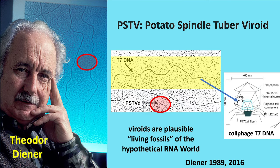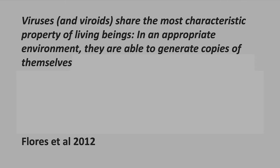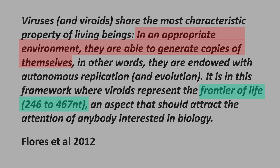That's interesting because we're interested in the origin of life. Flores, in a 2012 paper, wrote: viruses and viroids share the most characteristic property of living beings — in an appropriate environment, they are able to generate copies of themselves. In other words, they are endowed with autonomous replication and evolution. It is in this framework where viroids represent the frontier of life, an aspect that should attract the attention of anybody interested in biology. Notice there are 246 to 467 nucleotides in viroids. He's making a big claim — autonomous replication. Most people would say they can't, but every life form needs something else to reproduce.